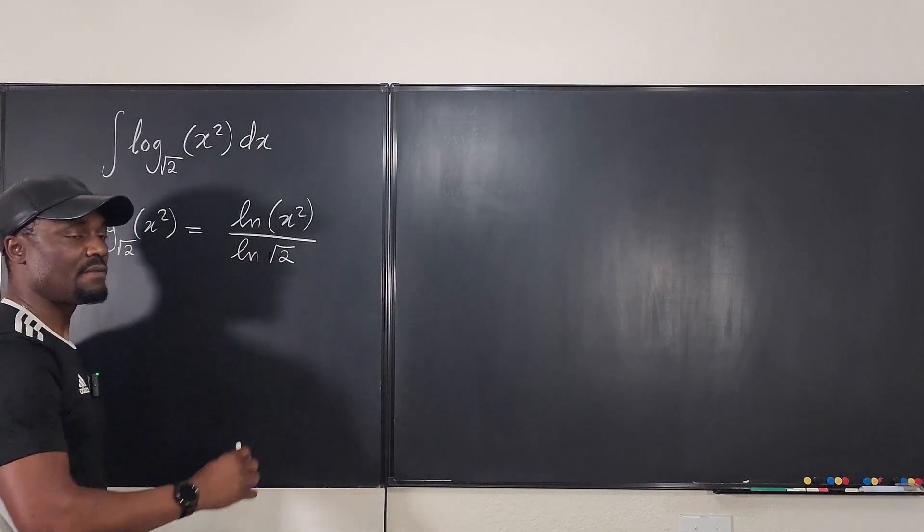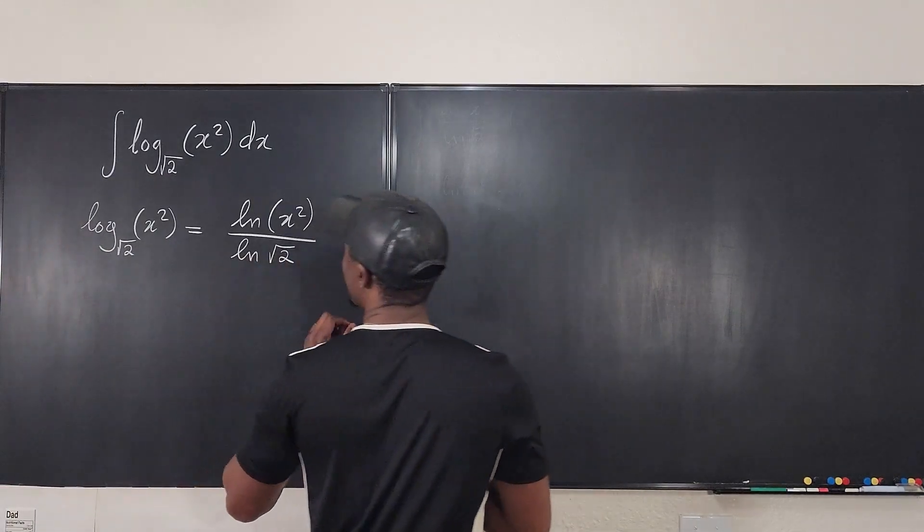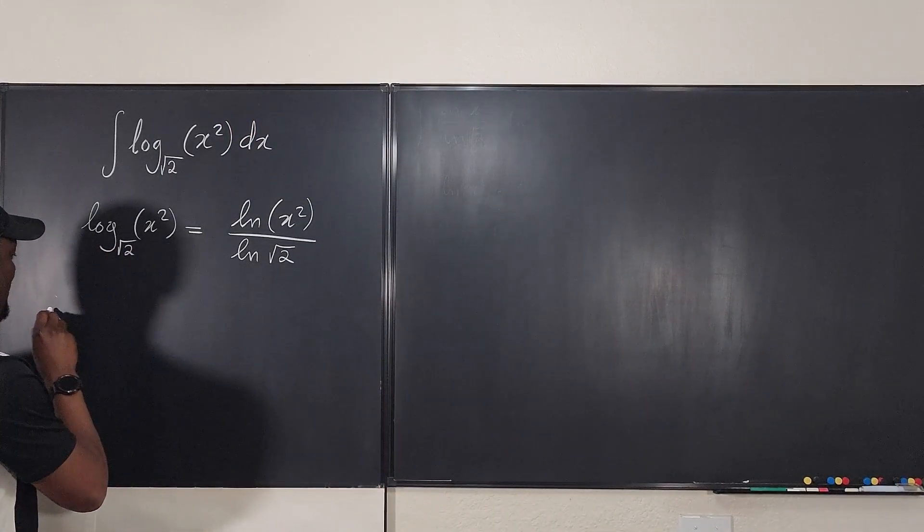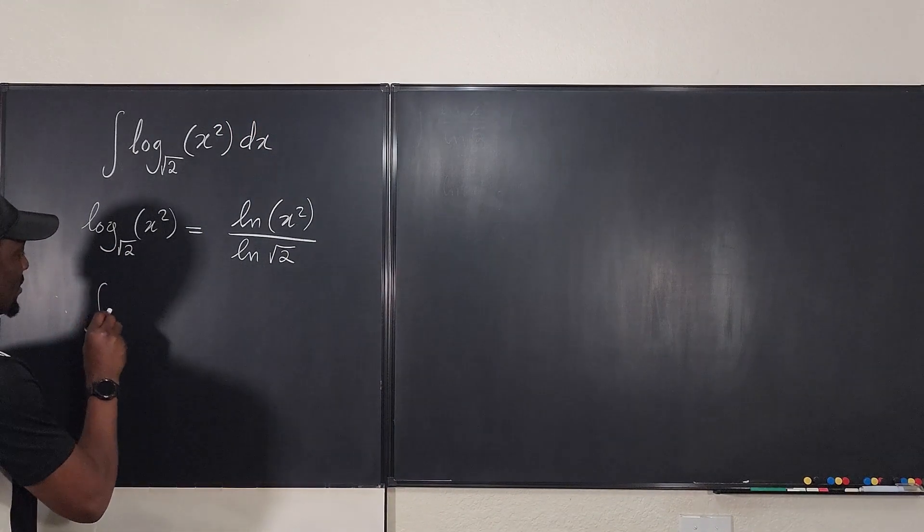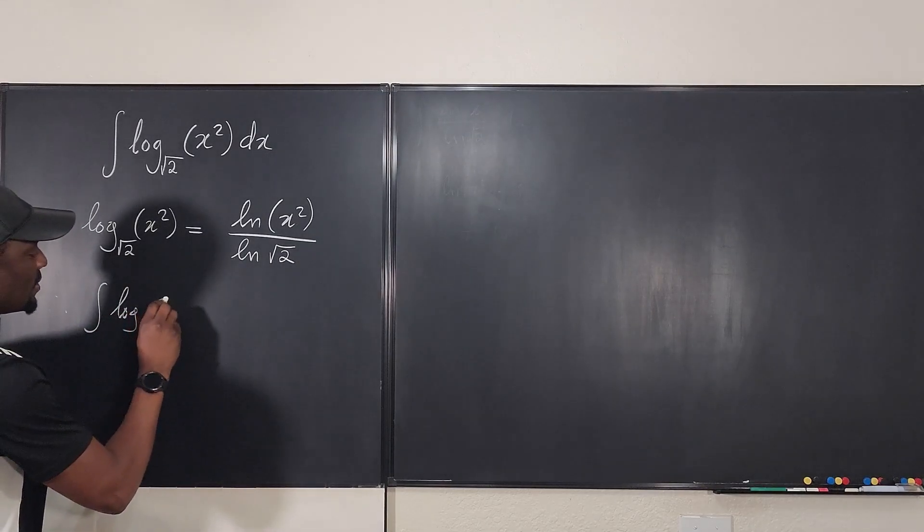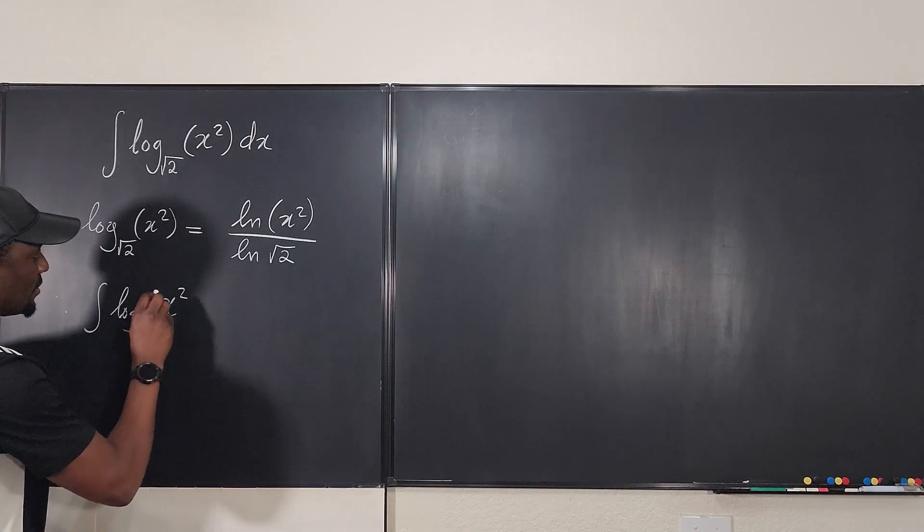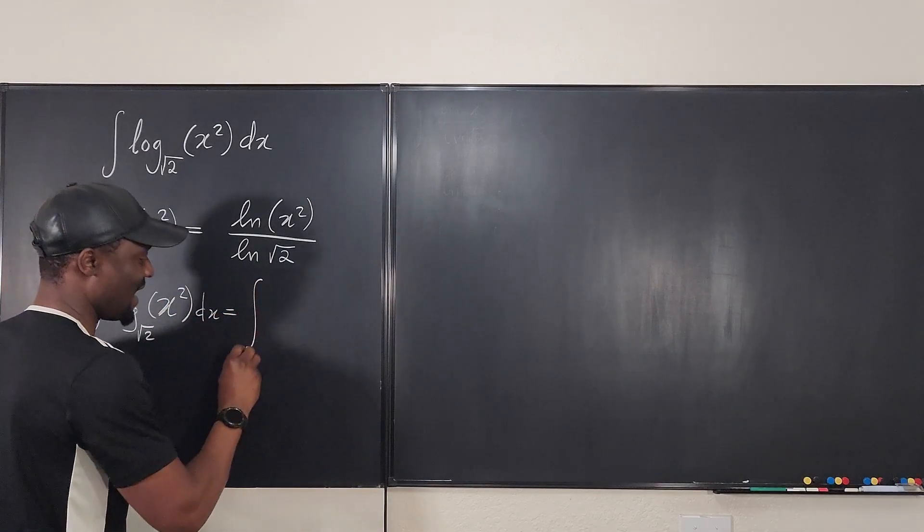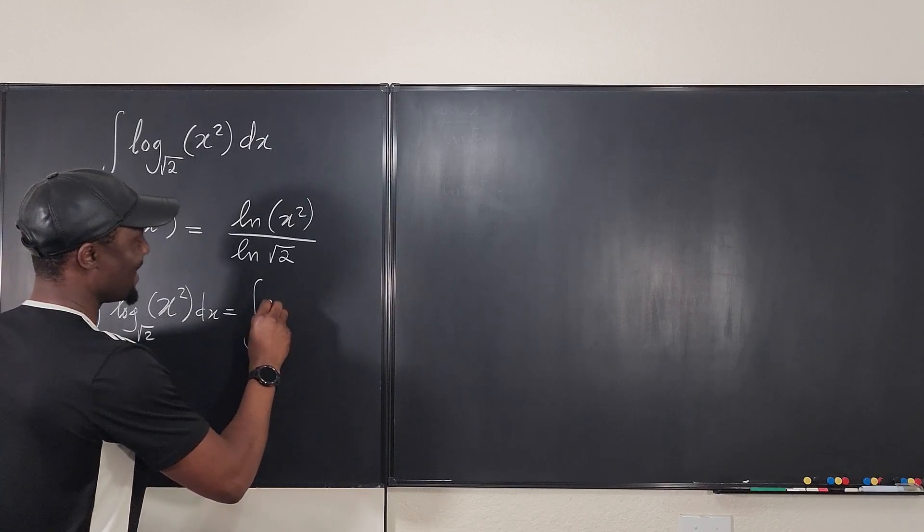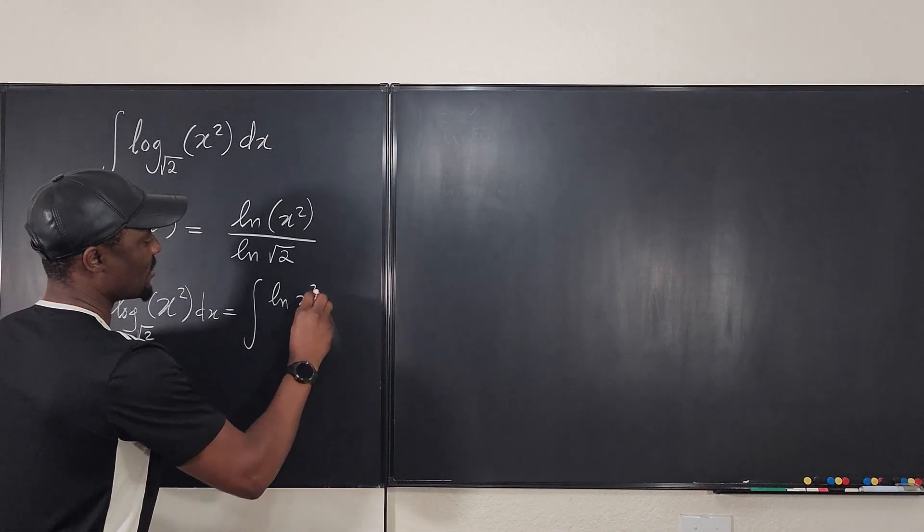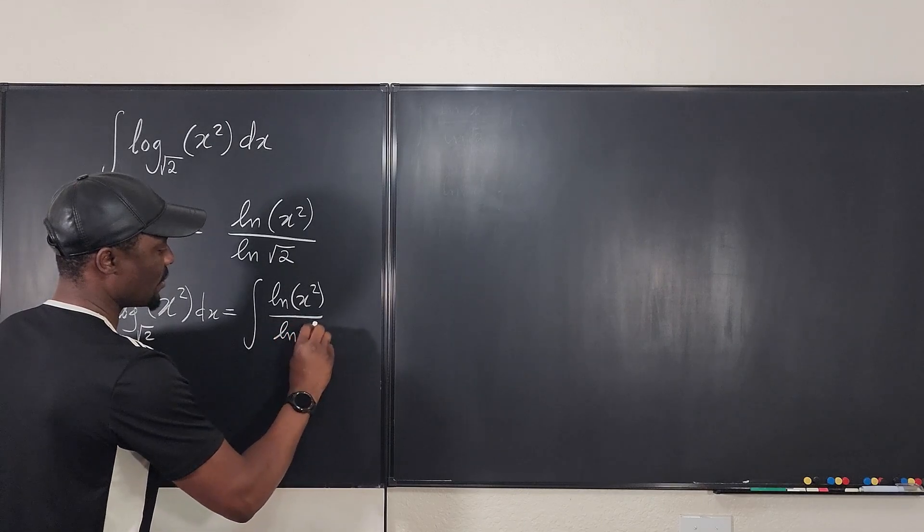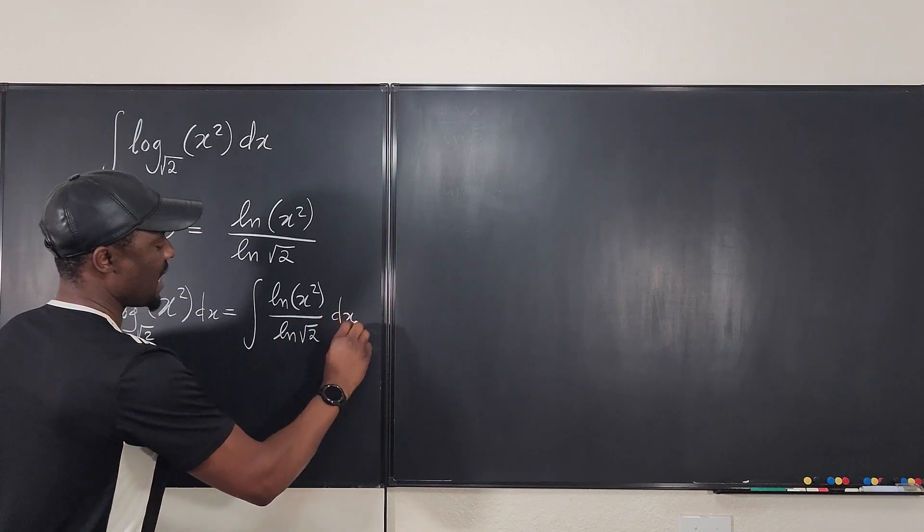This makes our life a lot easier. So which means that the problem we have, therefore, we can say that the integral of the logarithm of x squared to base the square root of 2 dx is the same thing as the integral of the natural log of x squared over the natural log of the square root of 2 dx.